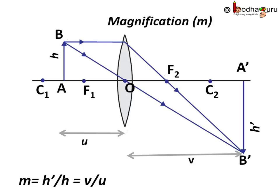So the magnification produced by a lens is also related to the object distance U and the image distance V. The relationship is M is equal to H' by H which is equal to V by U, that is ratio of image distance to object distance.